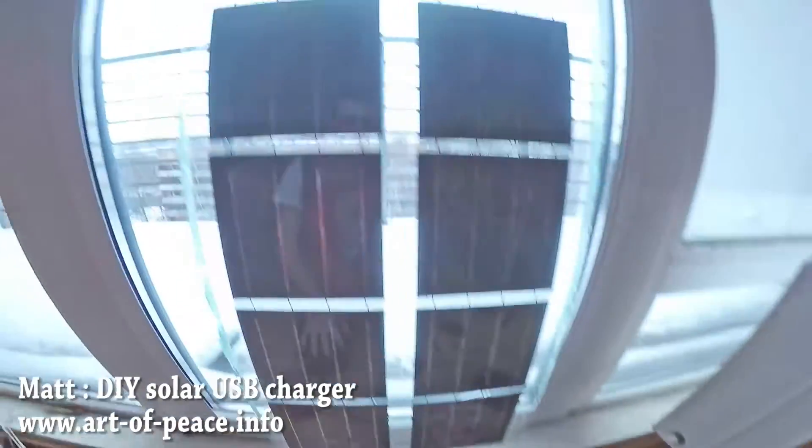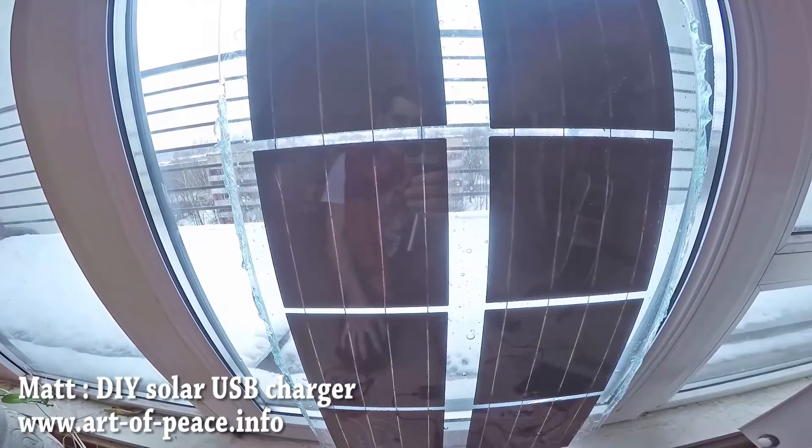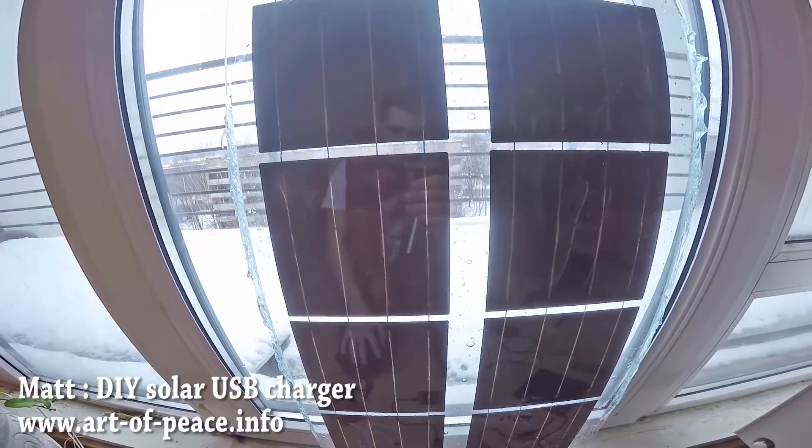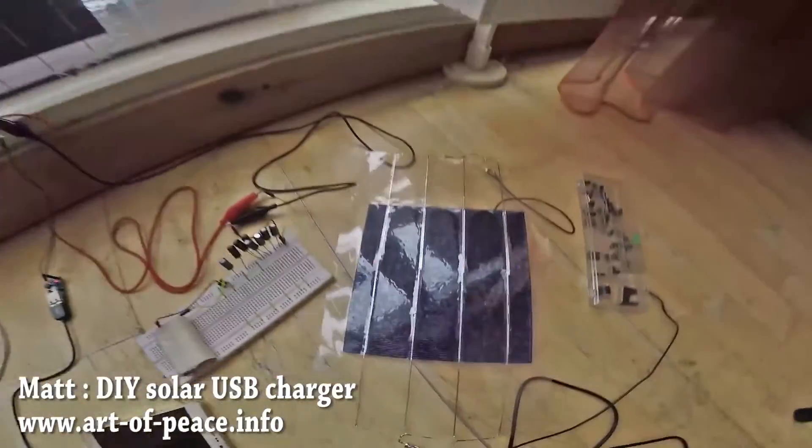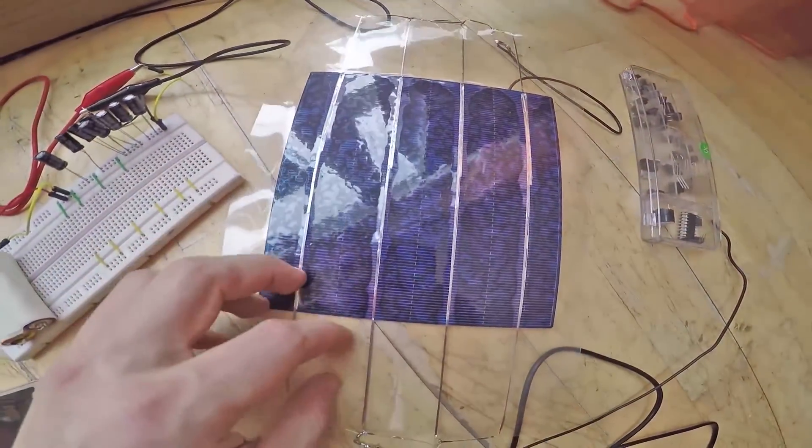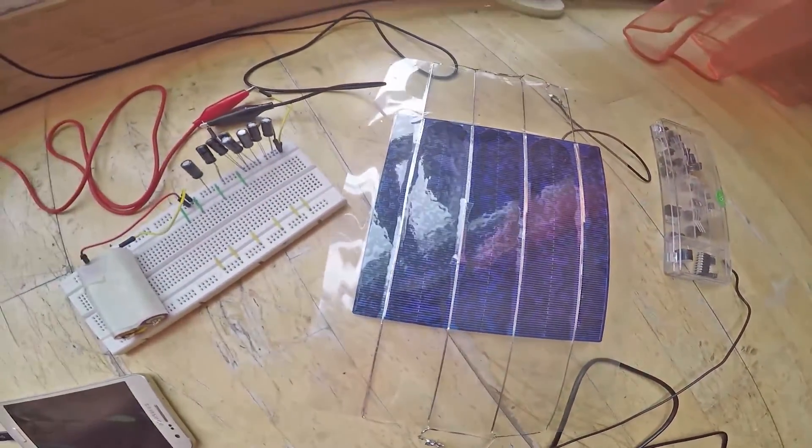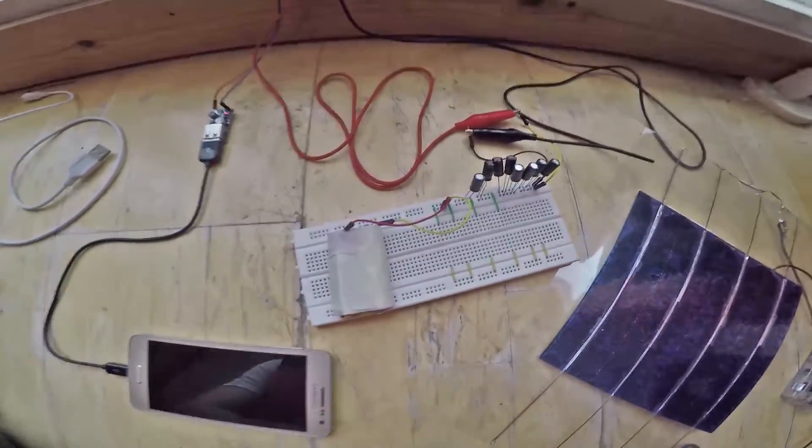So basically, here we have a solar cell which is soldered together. This is the same as here—looks like a solar cell structure. And what we have here is a breadboard.